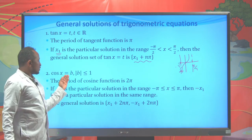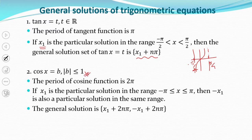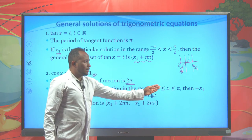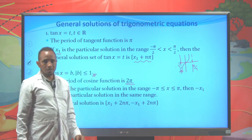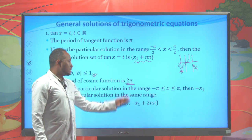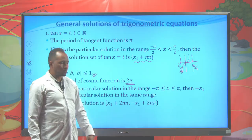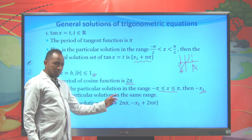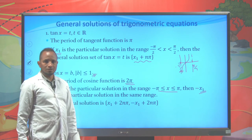For cos(x) = b where |b| ≤ 1, the period of cosine is 2π. If x₁ is a particular solution on [−π, π], then −x₁ is also a particular solution, since cosine is an even function. Therefore the general solution is x₁ + 2nπ and −x₁ + 2nπ.